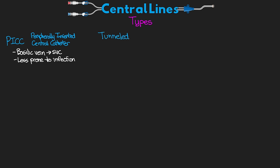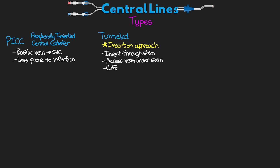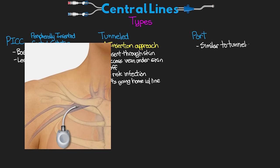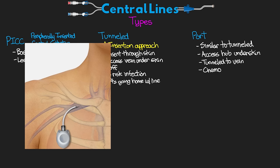The next type is tunneled lines. This more describes the insertion approach — the line is actually inserted through the skin and then accesses the vein under the skin. It often has a cuff under the skin to help hold it in place. These have less risk of infection and are often used for patients who are going to be going home with this line in place. We also have ports, which are similar to a tunneled line except the access hub is implanted under the skin and tunneled into the vein. These are most often used for patients receiving chemotherapy.